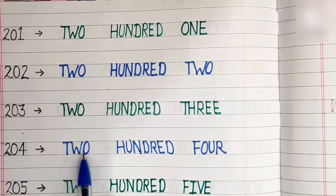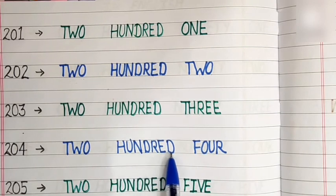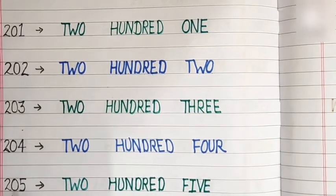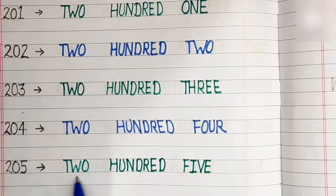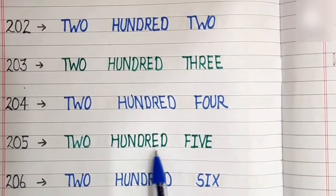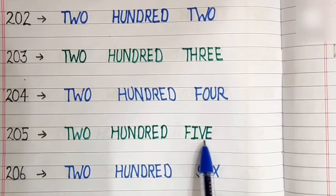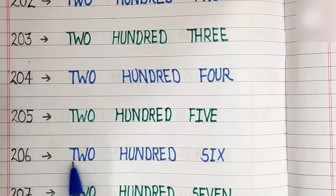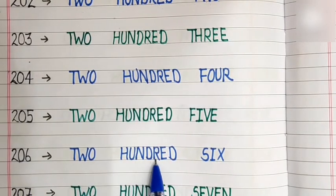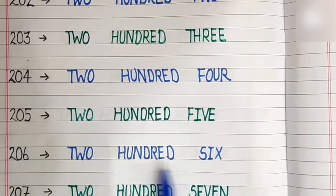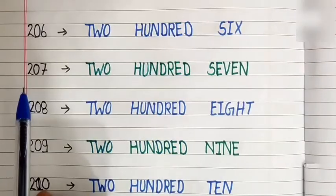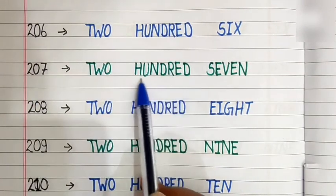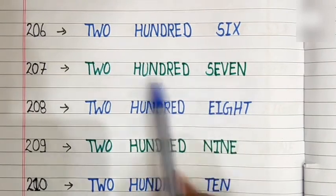204: T-W-O H-U-N-D-R-E-D F-O-U-R. 204. 205: T-W-O H-U-N-D-R-E-D F-I-V-E. 205. 206: T-W-O H-U-N-D-R-E-D S-I-X. 206. 207: T-W-O H-U-N-D-R-E-D S-E-V-E-N. 207.